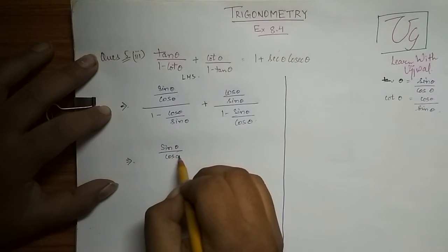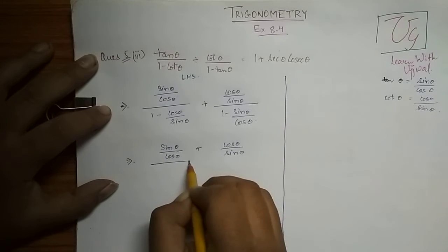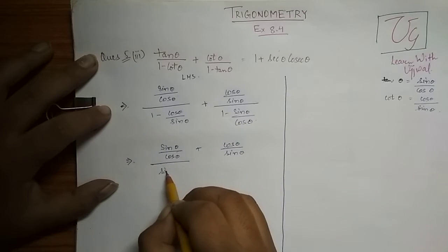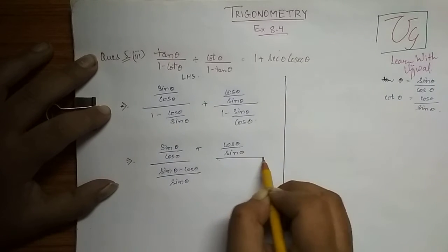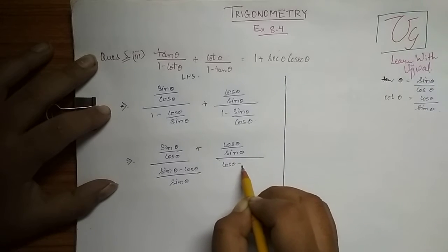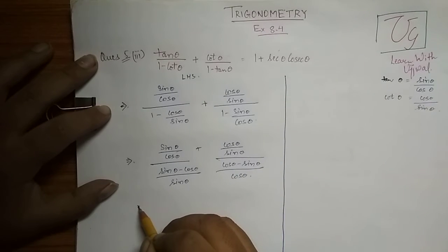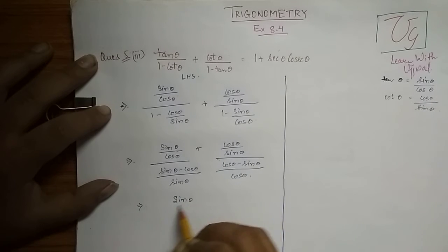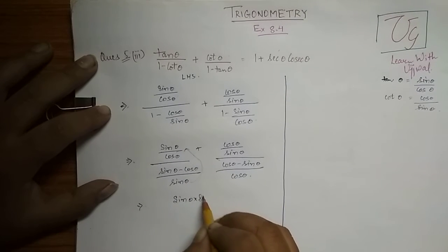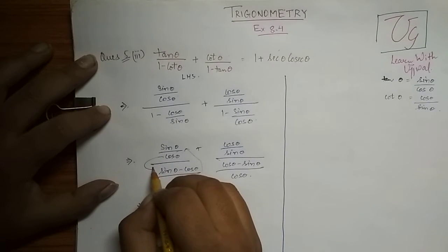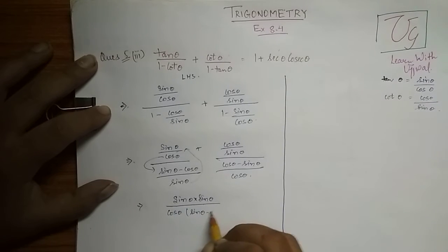Now solving this, the first term becomes sin θ upon cos θ divided by the quantity sin θ minus cos θ upon sin θ. And the second term becomes cos θ upon sin θ divided by the quantity cos θ minus sin θ upon cos θ. After solving, we get sin squared θ upon sin θ minus cos θ for the first part, and cos squared θ upon cos θ minus sin θ for the second part.